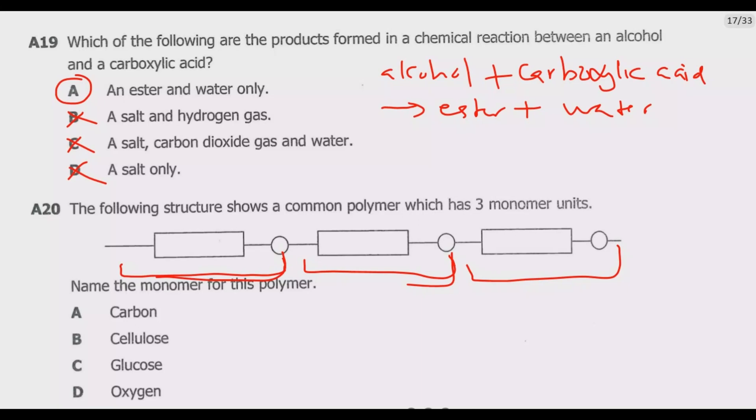We have the options. A, carbon. Notice carbon is not a polymer, carbon is an element, so A is out. The same as D. D is oxygen, an element but not a polymer, so D is out. We remain with cellulose and glucose.